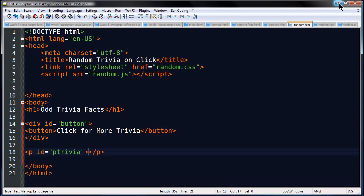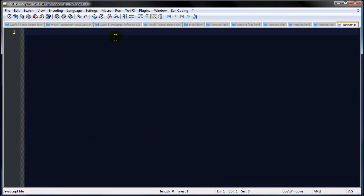So what I want to do is jump over to this external file which is ultimately going to be a JavaScript file. And I want to create an array. An array is a list of items. So I'm going to go ahead and create a variable called oddtrivia. And it's going to be equal to a set of brackets. And that is creating an array called oddtrivia.